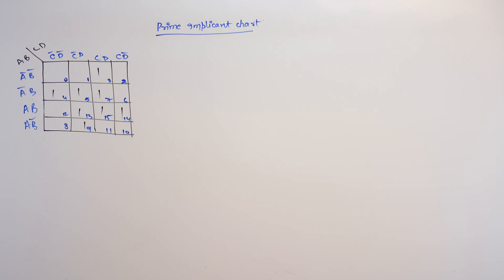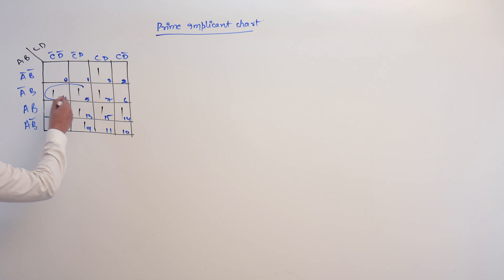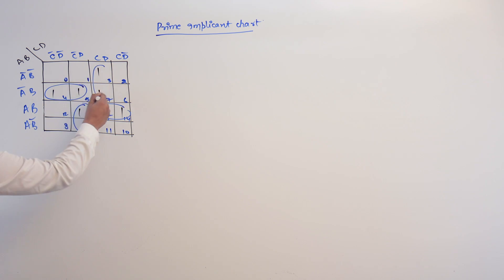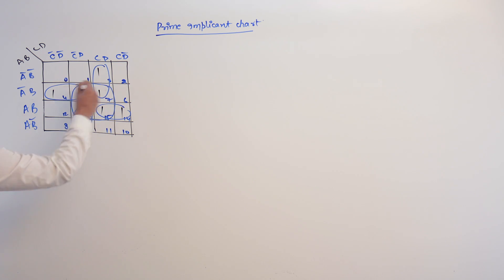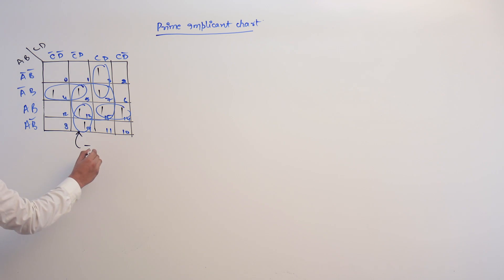Consider this K-map. In this K-map, what are the subcubes? This can be a subcube, it is a subcube, it is a subcube, it is a subcube as well as this complete is a subcube. So this subcube is representing C complement, D complement and A.